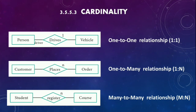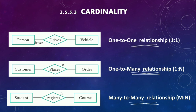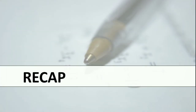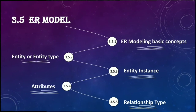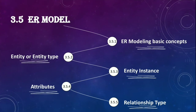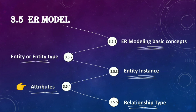To repeat: the types of relationship are one-to-one, one-to-many, and many-to-many. That is all for today. We discussed ER model — the three basic concepts are entity or entity type, entity instance, attributes, and relationship types. Thanks for watching.